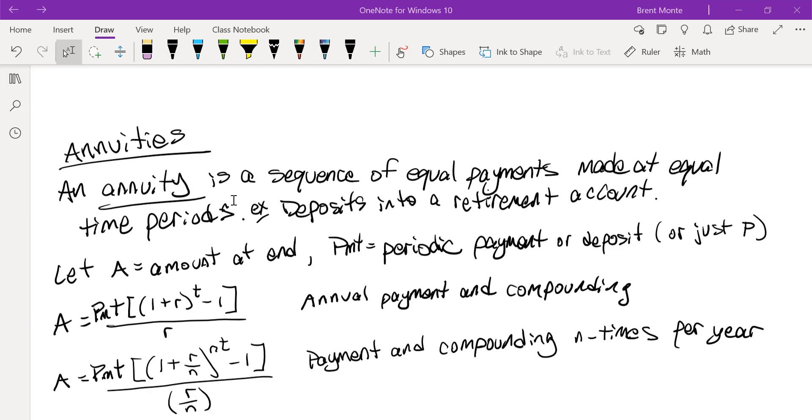As opposed to a single payment and then seeing how much money it's worth at the end of a certain time period, we're making continuous time period payments of equal amounts, and we want to see how much they're worth.